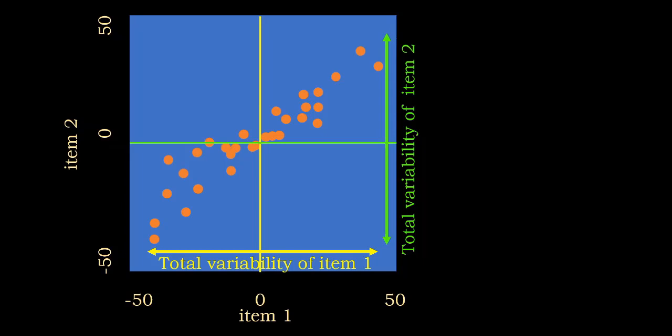I'm going to show how we find a principal component when we have only two variables, and the same principle applies to any number of variables. Here we've got the responses to item one on the x-axis and responses to item two on the y-axis. In this case it's a continuous variable, but it applies as well to non-continuous, discrete numerical variables.